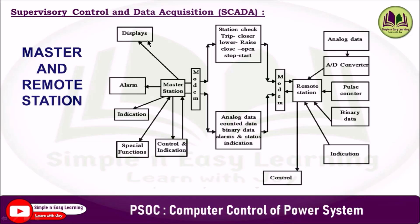This is the complete structure of a master and remote station. In the master station, there are indication alarm displays and special functions where control and indications take place. In between, there is a communication link through a modem. At the remote station, analog data is gathered from relays using sensors, then processed through analog-to-digital converters, pulse counters, and binary data, with status indications and control operations taken from the SCADA unit.